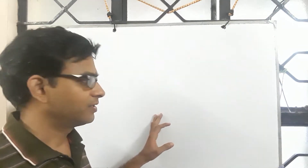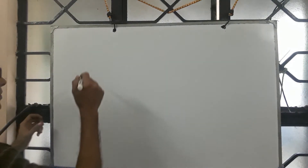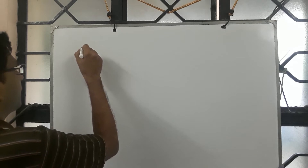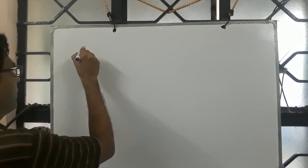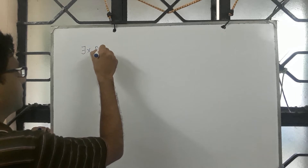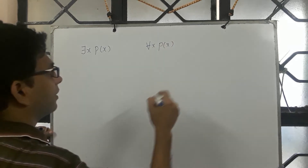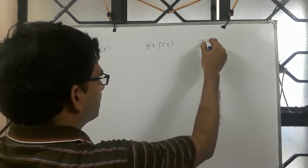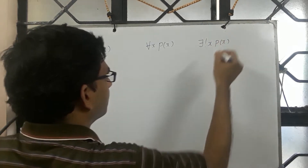Let us continue our discussion on predicate logic, in particular how the quantifiers are used. We have looked at two things: one is the existential quantifier, which is there exist x p of x; we also looked at for all x p of x; and then we looked at a special case which is there exist unique x such that p of x is true.